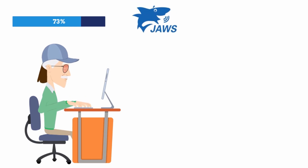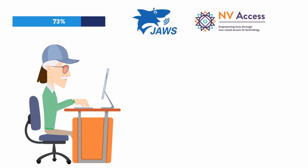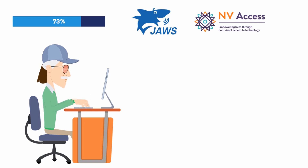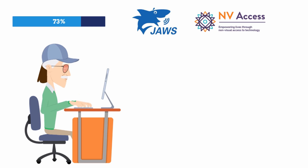Screen readers such as JAWS or NVDA should announce the progress updates as they occur. If the progress bar is labeled then the label text should be mentioned as well. Note that opinions may differ on how assistive technologies should handle this — announcing the progress is one of those opinions and therefore not normative.